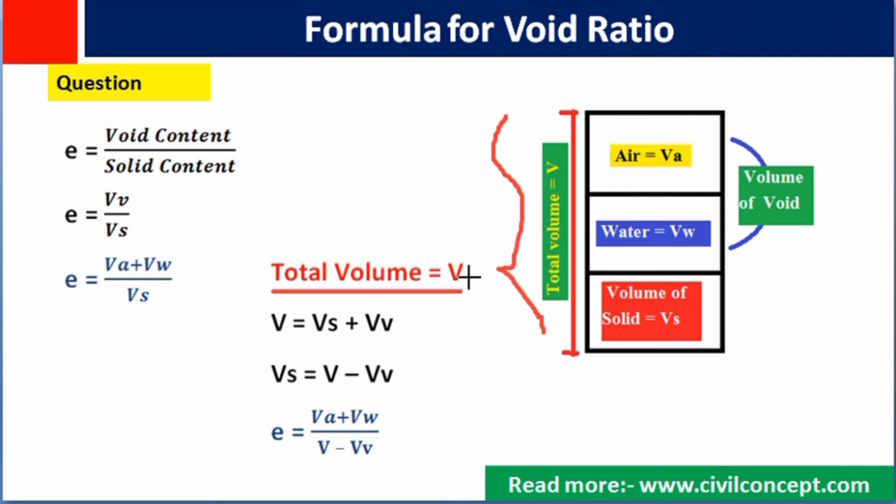Total volume of space is V. So V is equals to volume of solid, this volume of solid, plus volume of void. It means volume of this air and water.